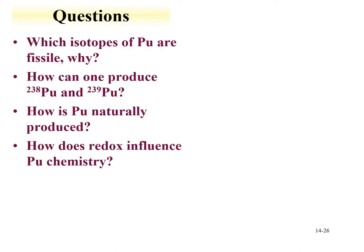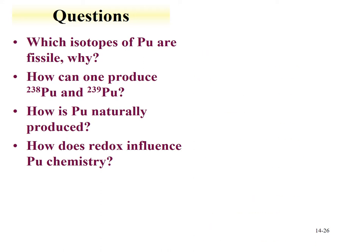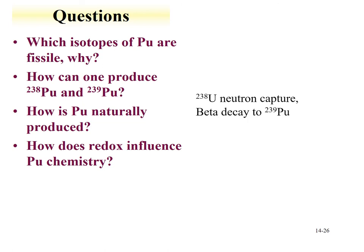Sample review questions: Which isotopes of plutonium are fissile? The odd-A plutonium isotopes are fissile because they have an unpaired neutron — the primary example being plutonium-239. How can one produce plutonium-238 and plutonium-239? For plutonium-238: neutron capture on neptunium-237 produces neptunium-238, which undergoes beta decay to produce plutonium-238 — the route by which plutonium was originally discovered.